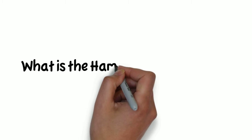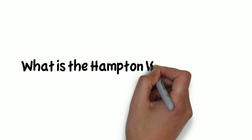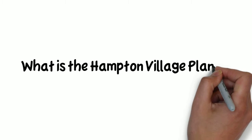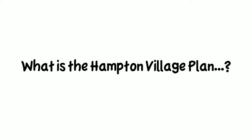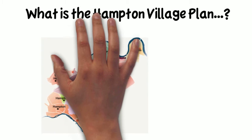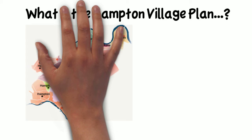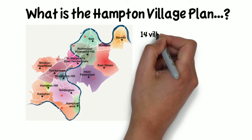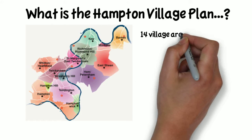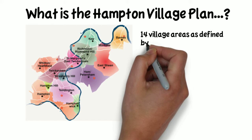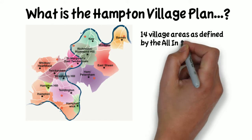This is a short video which explains what the Hampton Village Plan is and how you can get involved in shaping it. This is a map of the Borough of Richmond-upon-Thames showing the 14 different village areas. The areas were defined by residents in the All-in-One survey carried out in 2010.